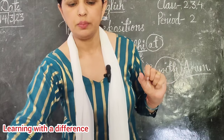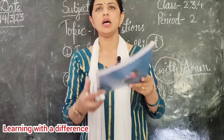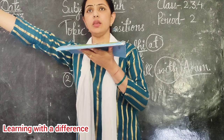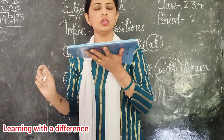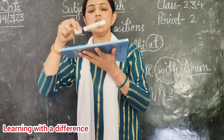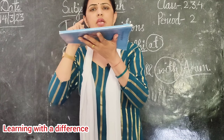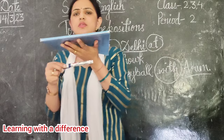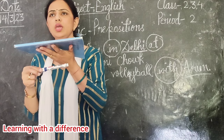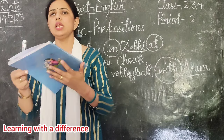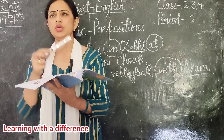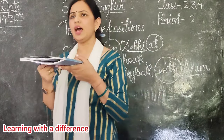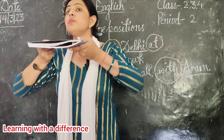Now look at ma'am. See — this is a book, and this is a pen. Where is the pen now? The pen is on the book. Very good. Now where is the pen? The pen is under the book. Now I am putting the pen inside. The pen is in the book.